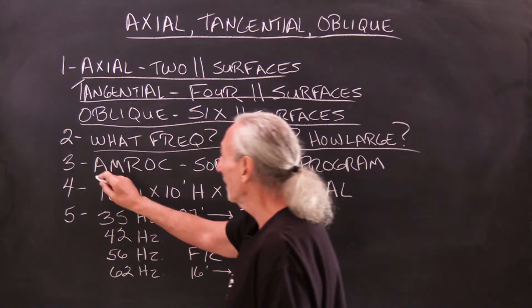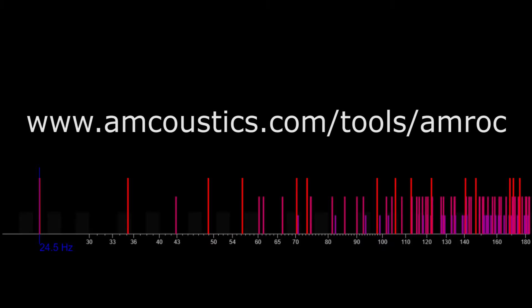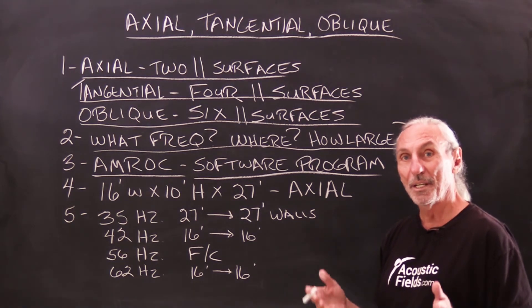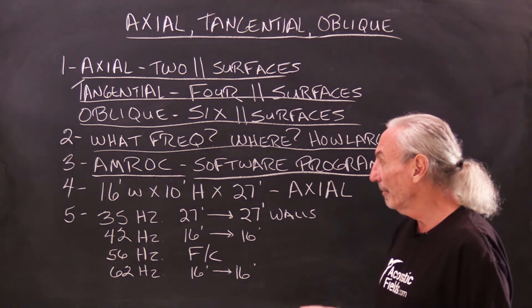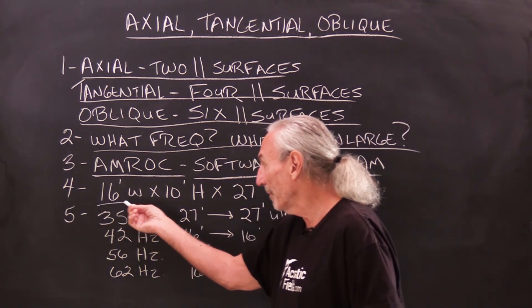So there's a software on the internet called AMROC and we'll post a link here so you can get to it and see. But the nice thing about this software is that you plug in your room dimensions. It tells you the frequency of your problem and it also tells you the location. So let's use an example here.